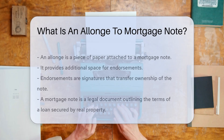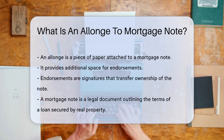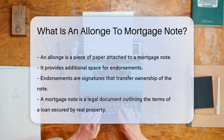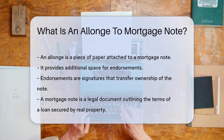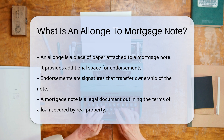An allonge is a piece of paper attached to a mortgage note. It is used to provide additional space for endorsements. Endorsements are signatures that transfer ownership of the note.